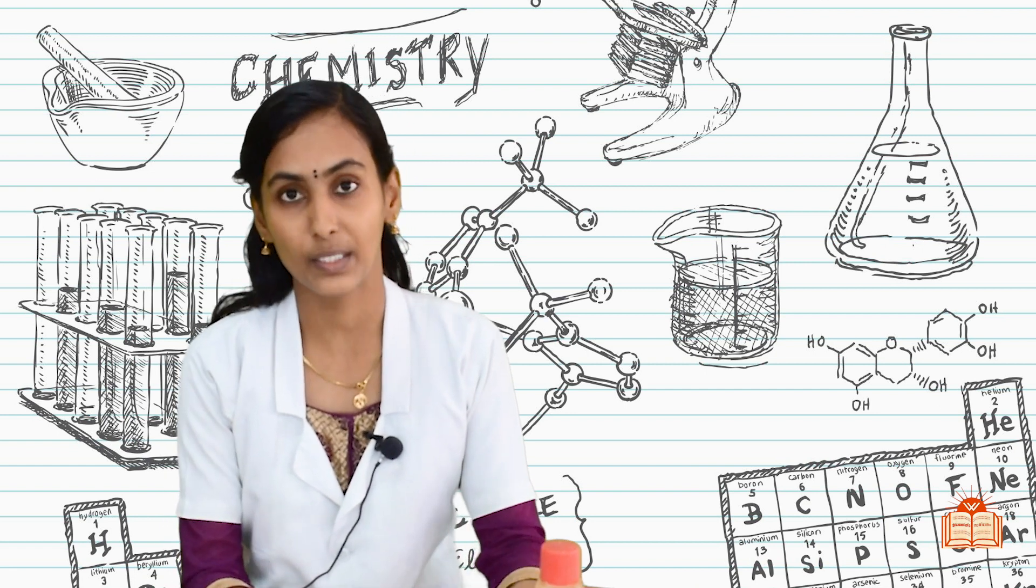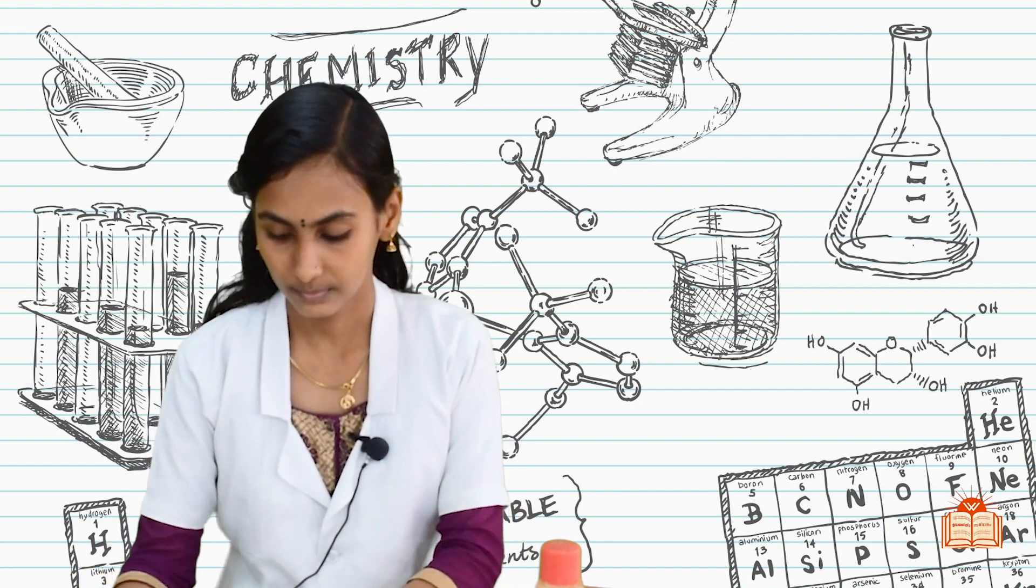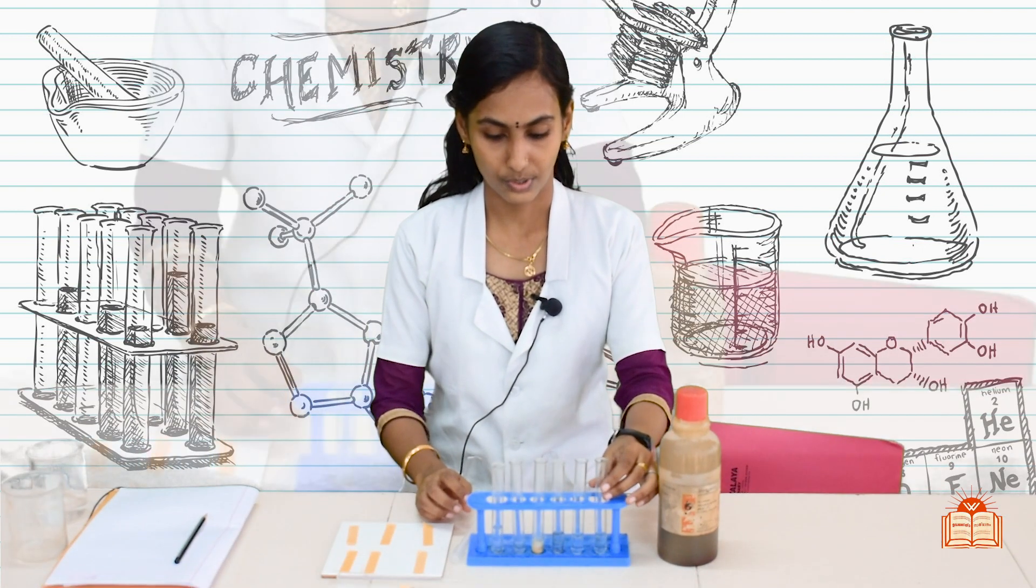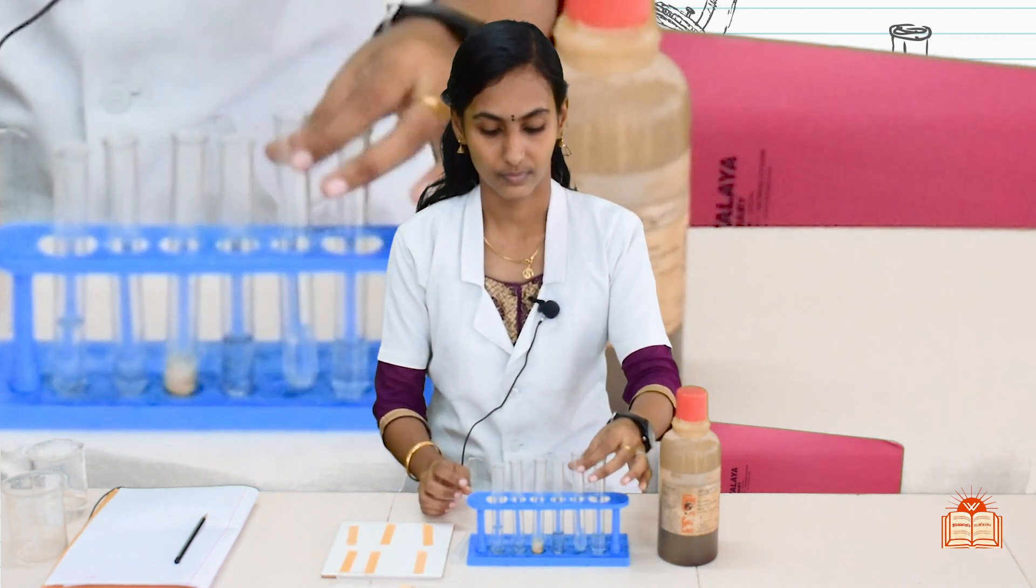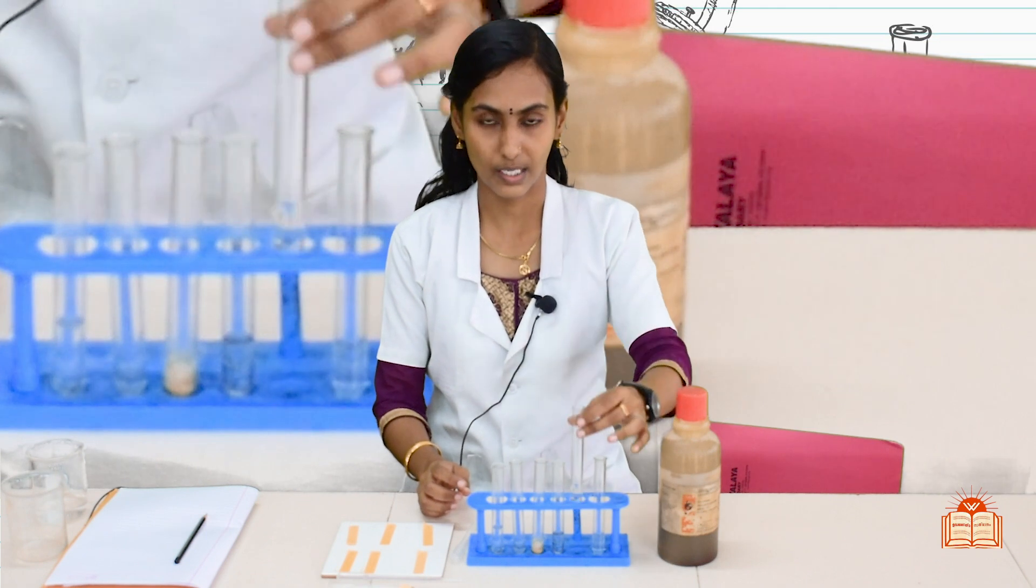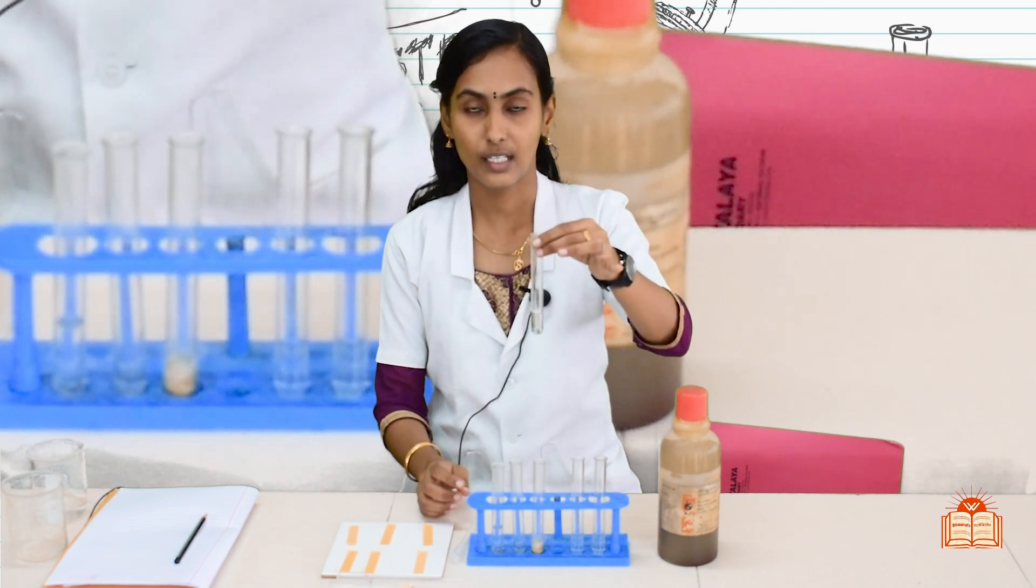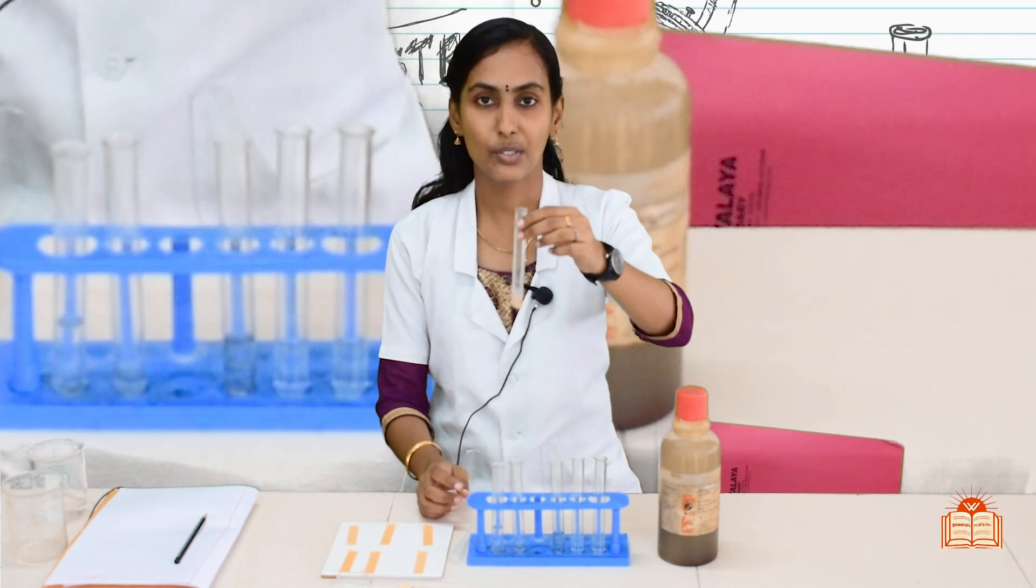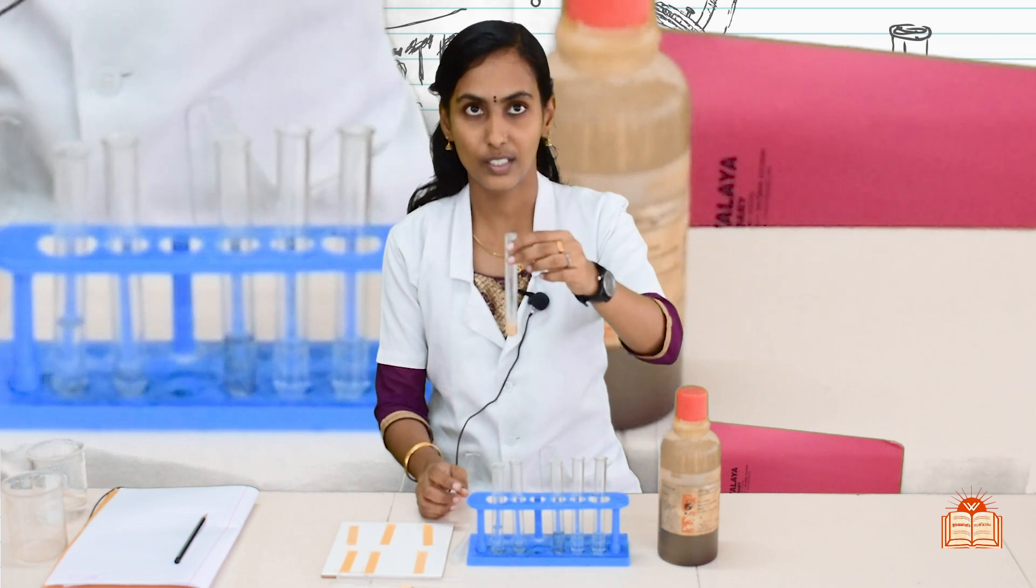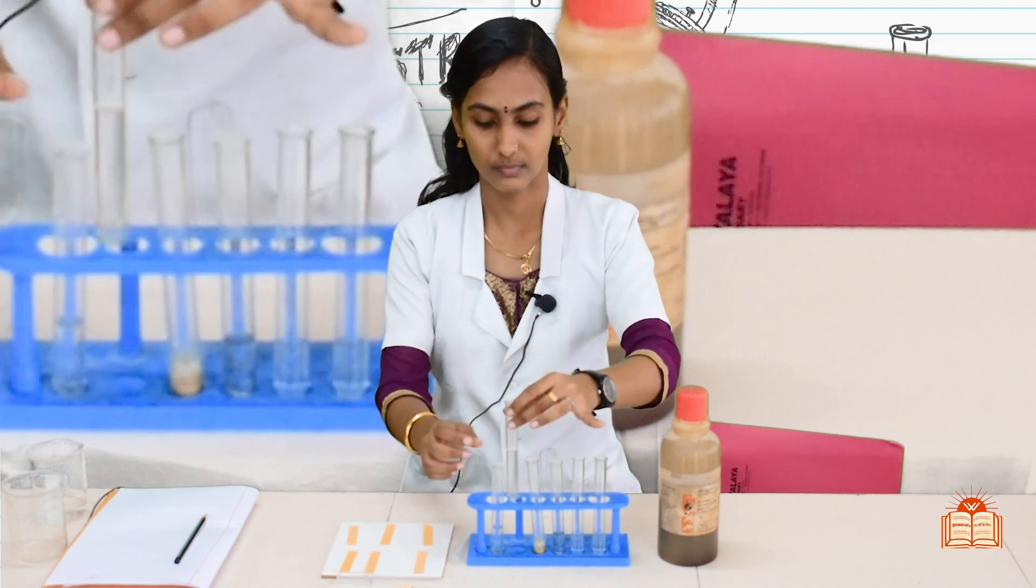Now we will check the pH of various solution. Here I have taken six solutions: dilute HCl solution, dilute NaOH solution, sodium hydroxide solution, ethanoic acid or acetic acid, instead of lemon juice I have taken orange juice, water and sodium bicarbonate solution.